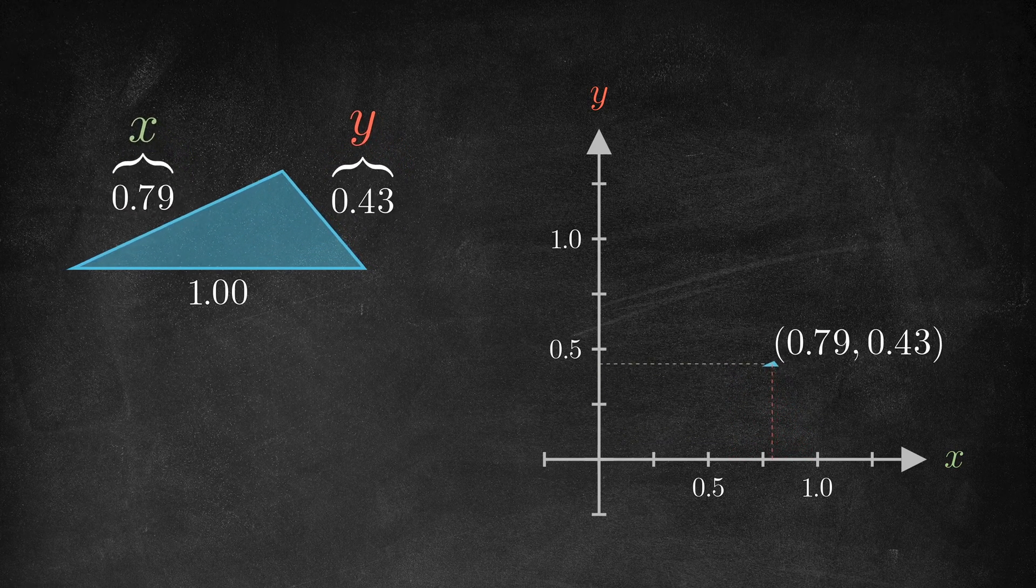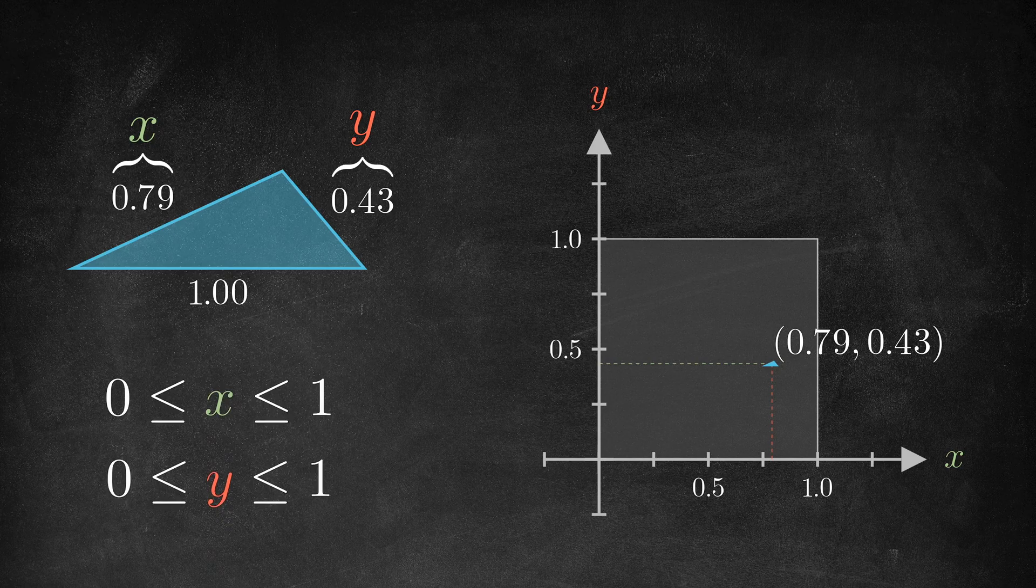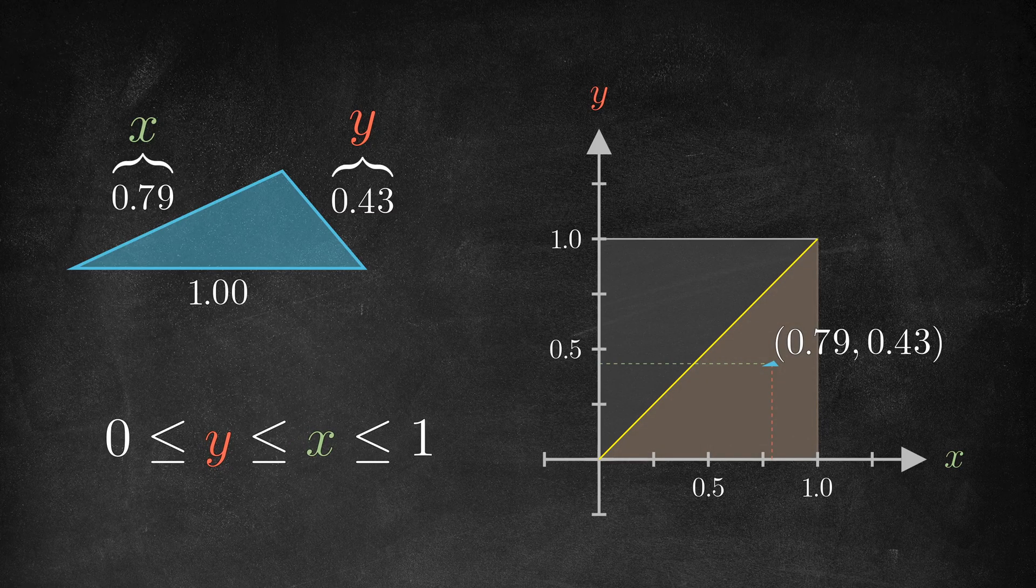However, there are many values of x and y that don't correspond to a triangle. For one thing, both x and y have to be between 0 and 1, limiting us to this box. And by definition, x is at least as big as y, limiting us further to the lower right region of that box.